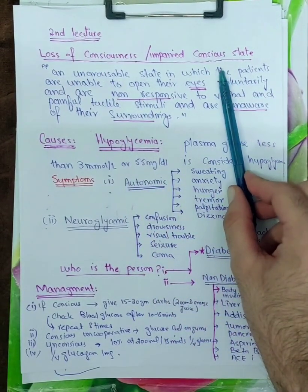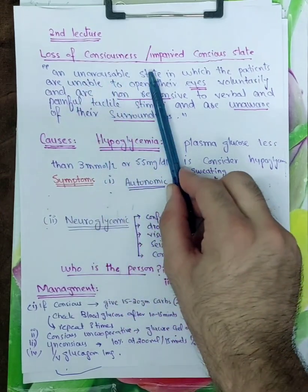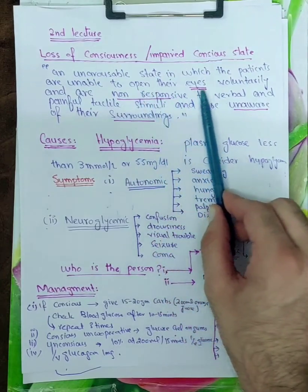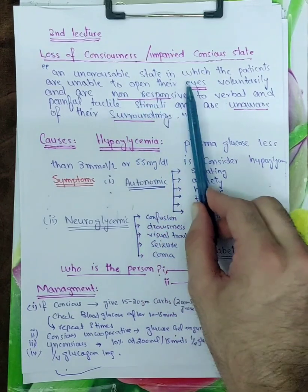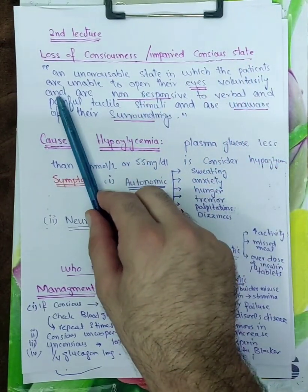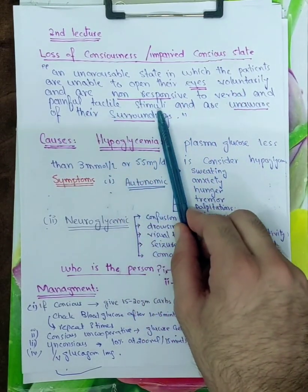So what is loss of consciousness? Loss of consciousness is an unarousable state in which the patients are unable to open their eyes voluntarily. What does it mean? The patient will not be able to open his eyes voluntarily.